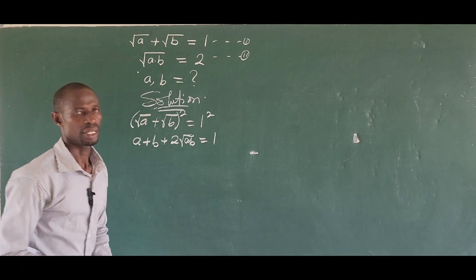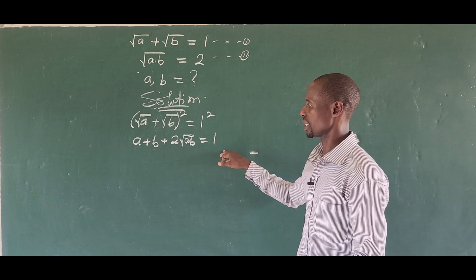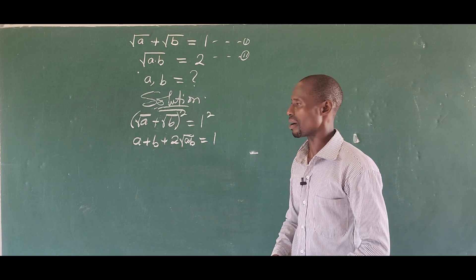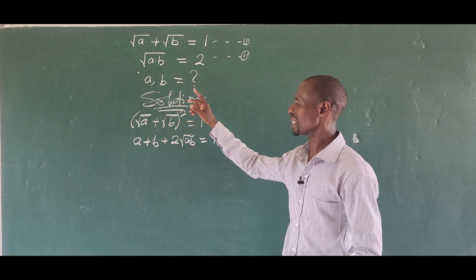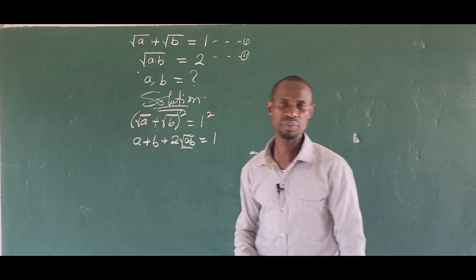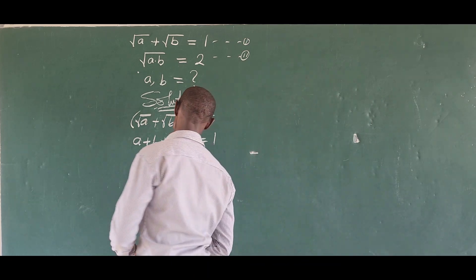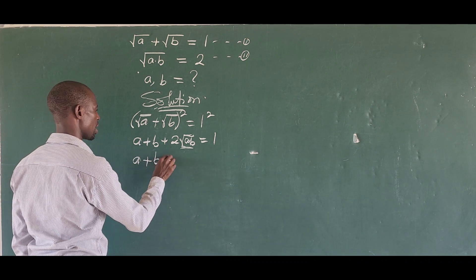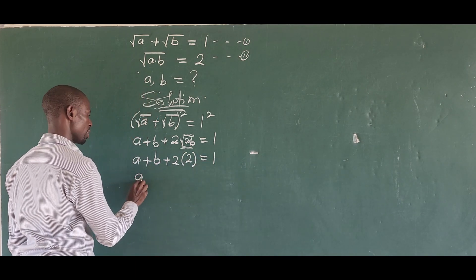If you open this out, that's what it gives you. Now that term we have in here — 2*sqrt(ab) — is exactly what we have in equation two. From equation two, sqrt(ab) equals two. So we can do a simple substitution, putting two in place of sqrt(ab), giving us a plus b plus two times two equal to one.